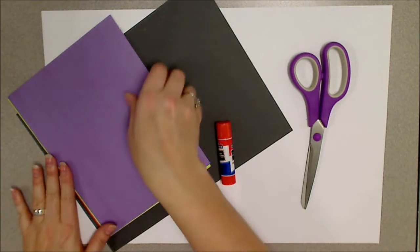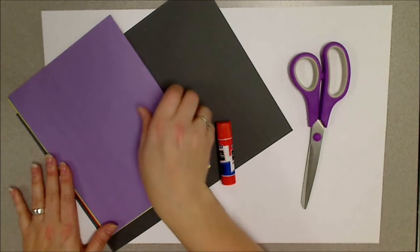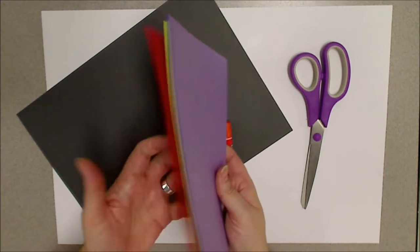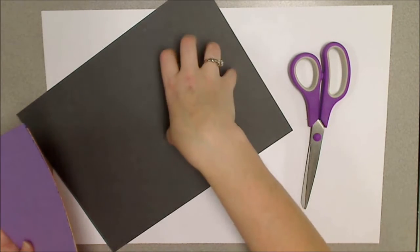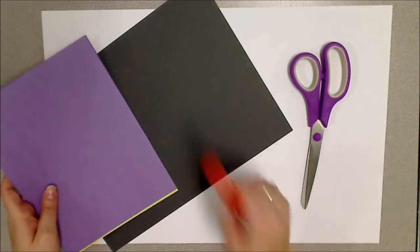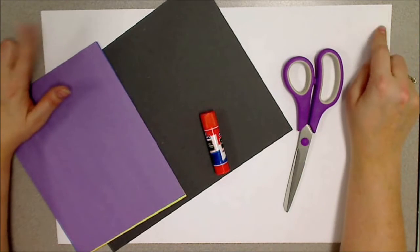The things you're going to need for today are scrap extra pieces of paper. These do not have to be pretty pieces of paper, these ones have already had pieces cut off. You're gonna need a black or dark colored piece of construction paper, scissors and glue.